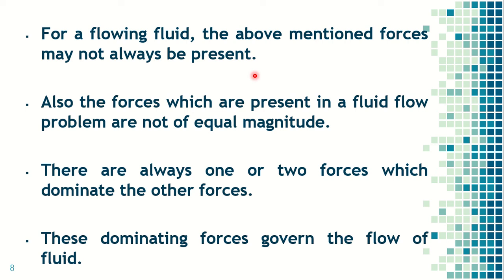For a flowing fluid, all the above-mentioned forces may not always be present. If a fluid is flowing from section A to section B, it is not compulsory that all six forces are acting on it. Also, the forces present in a fluid flow problem are not necessarily of equal magnitude — for example, gravity force M×g need not equal pressure force P×A.